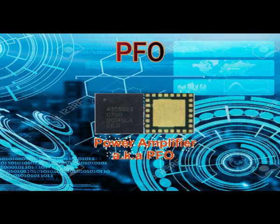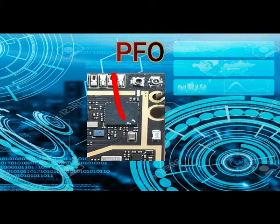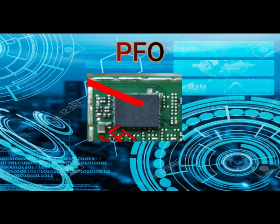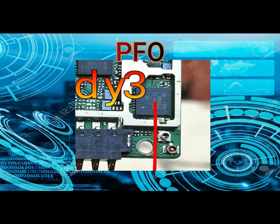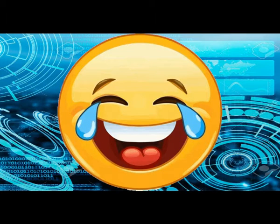The Power Amplifier, or PFO IC, is also found in the network section of a mobile phone. It is referred to as the PA — Power Amplifier — just like the one used at a party to boost your loudspeaker. This component is responsible for filtering, amplifying, and selecting the country or home network of a mobile phone. When the power amplifier is faulty, a network problem will surface and calls will be difficult or impossible. Replace the PA when this problem occurs.